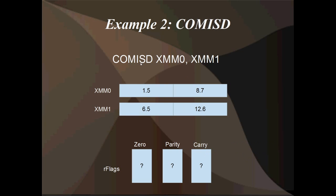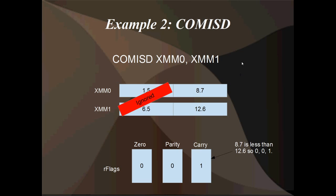In almost exactly the same way, if we're using COMISD, or compare scalar double, the top elements of the registers are going to be ignored and we're only comparing the lowest elements. So 8.7 is going to be compared to 12.6. Since 8.7 is less than 12.6, we're going to get the zero flag reset to 0, the parity flag reset to 0, but the carry flag is going to be set to 1. This is almost exactly the same as if you were comparing integers — that's kind of how they designed it, so that you could compare the lowest elements of SSE registers in a similar way to integers.